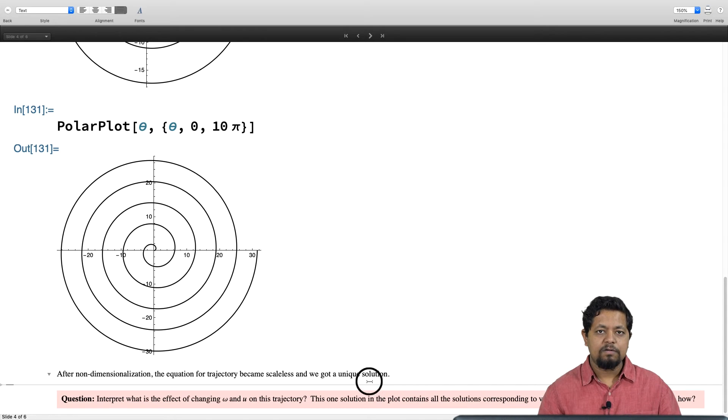Finally, let us interpret from this solution. The question I have for you is: what is the effect of changing omega and u on this trajectory?